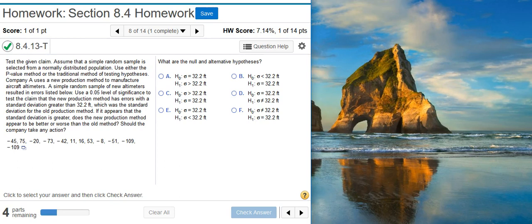Use a 5% level of significance to test the claim that the new production method has errors with a standard deviation greater than 32.2 feet, which was the standard deviation for the old production method. If it appears that the standard deviation is greater, does the new production method appear to be better or worse than the old method? Should the company take any action?